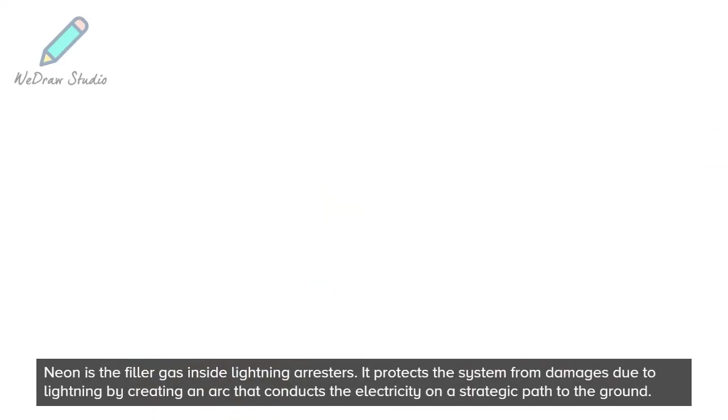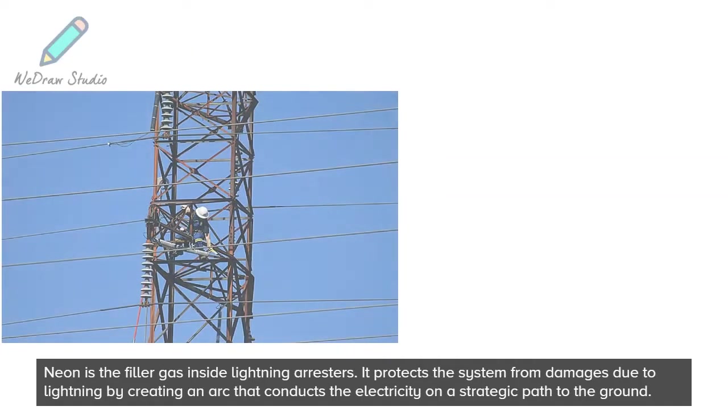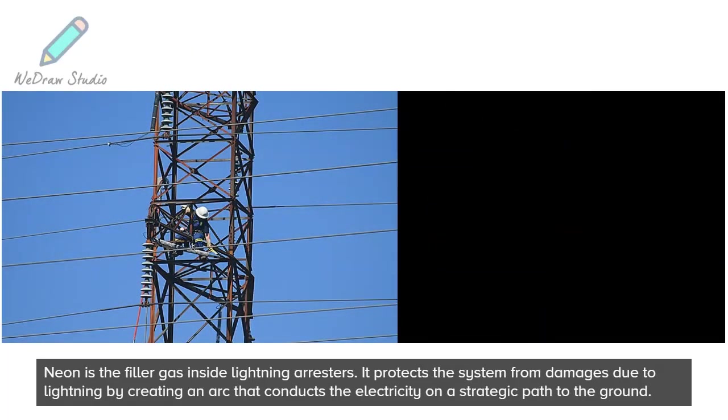Neon is the filler gas inside lightning arresters. It protects the system from damages due to lightning by creating an arc that conducts the electricity on a strategic path to the ground.